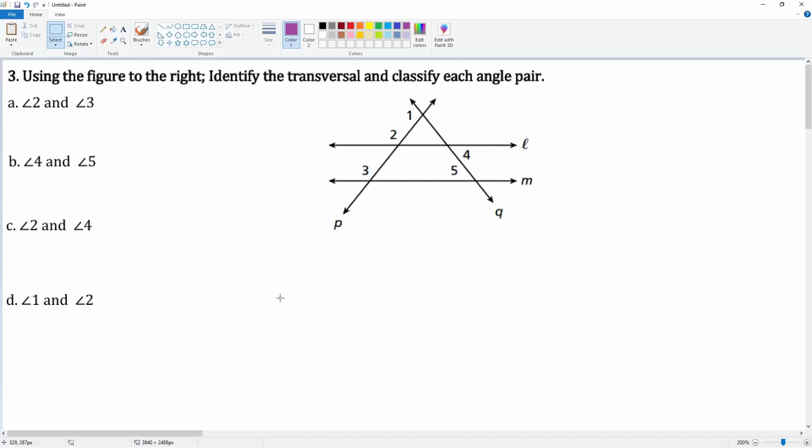Here we're going to use this figure on the right. We have to identify the transversal within each angle pair. Part A looks at angles 2 and 3.